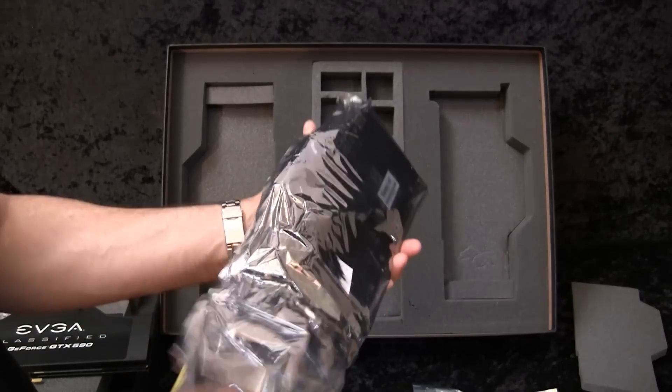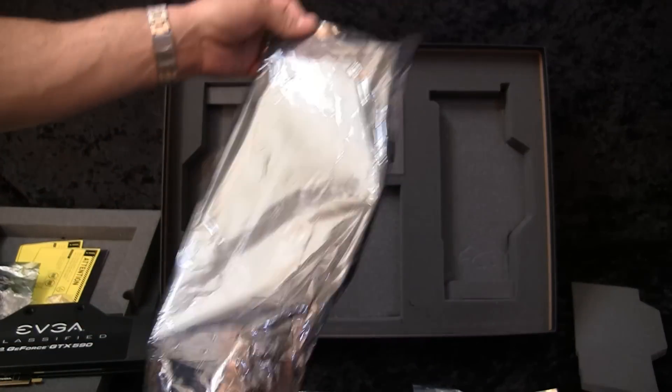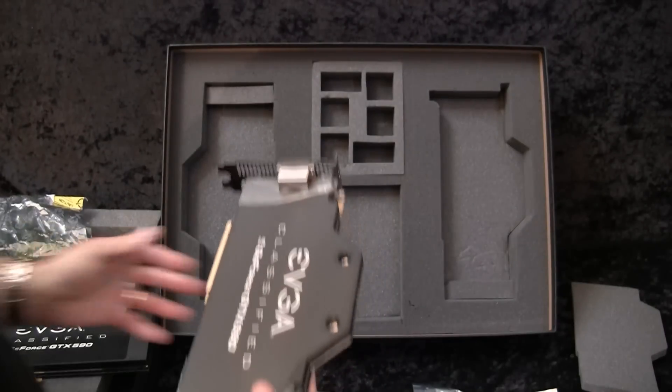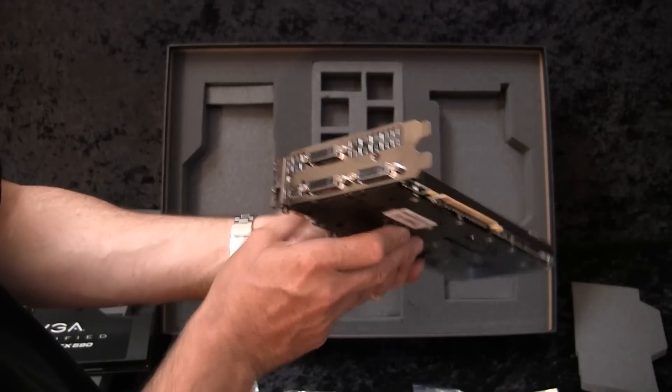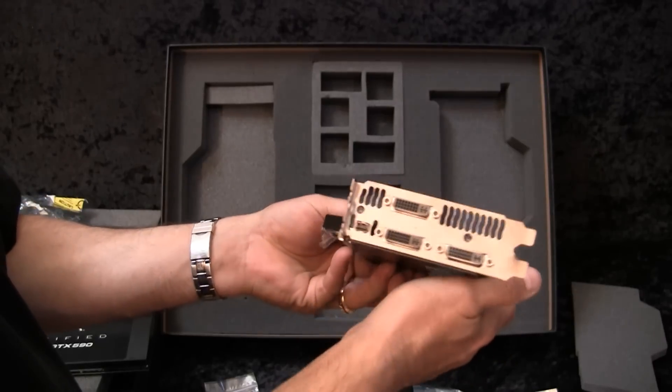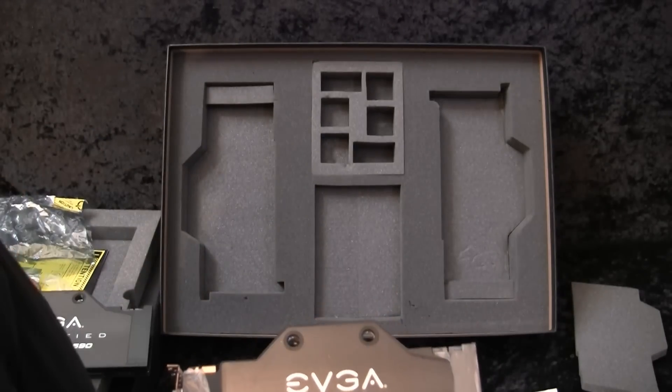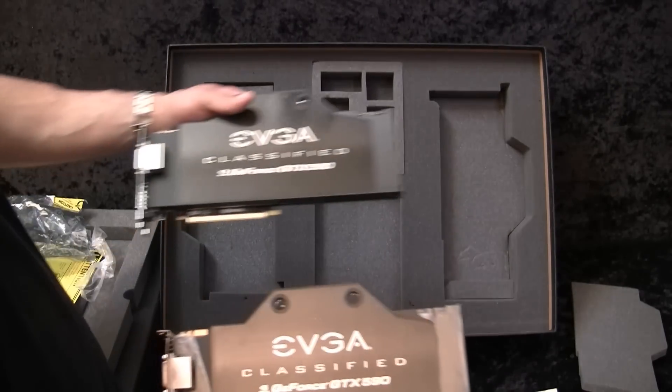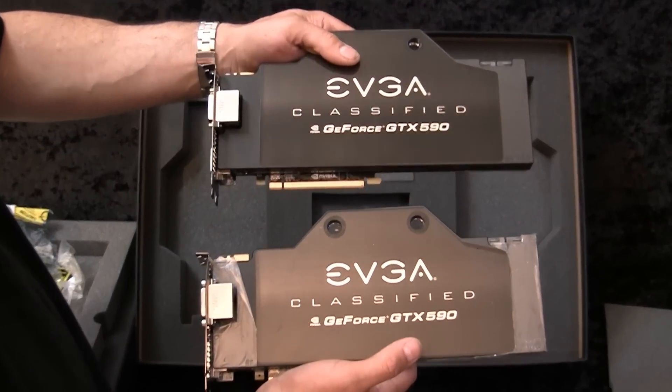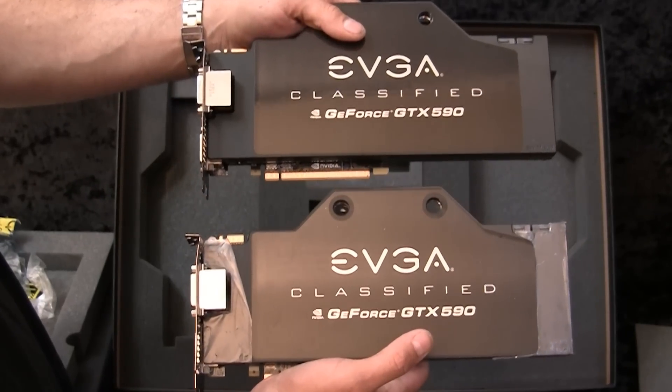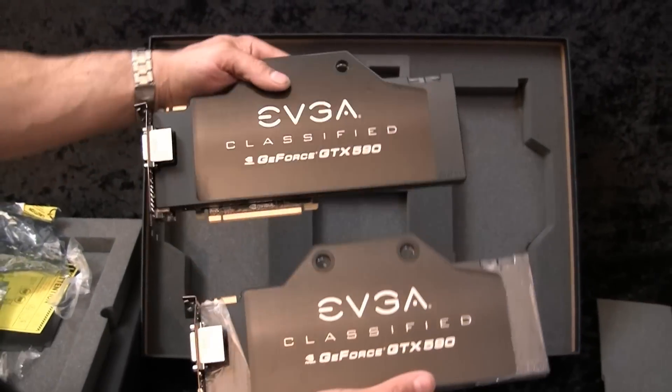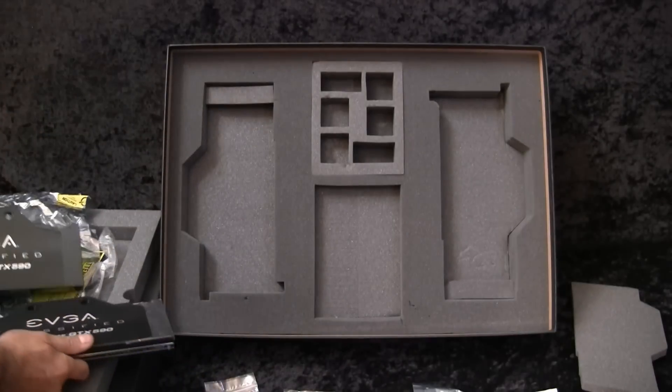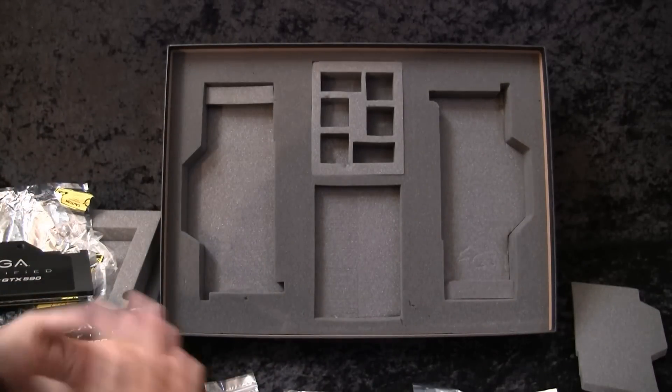Let me take out the other one, let's see if the other one's bent too. He's actually opened this one also. Well, this one looks fine. So anyway, there's the two cards. Wow, isn't that sweet? These are going to look nice in there. Let me go ahead and clean this up and then we'll just tell you a little bit about the specs.